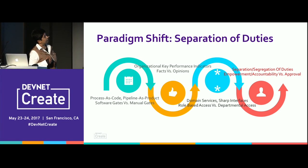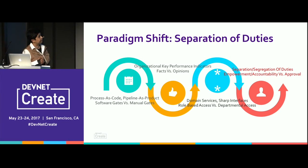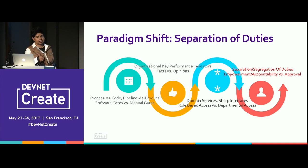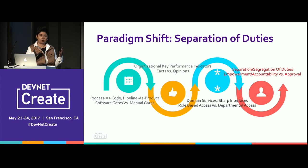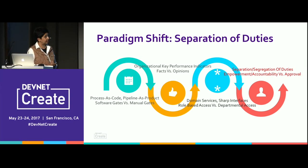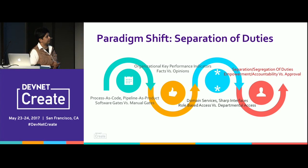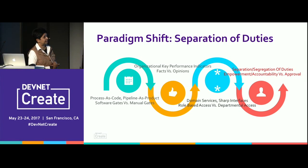The second paradigm shift is organizational key performance indicators — KPIs. These are more facts than opinions: organizational KPIs versus departmental KPIs. The third one is domain services with sharp interfaces, role-based access versus departmental access.